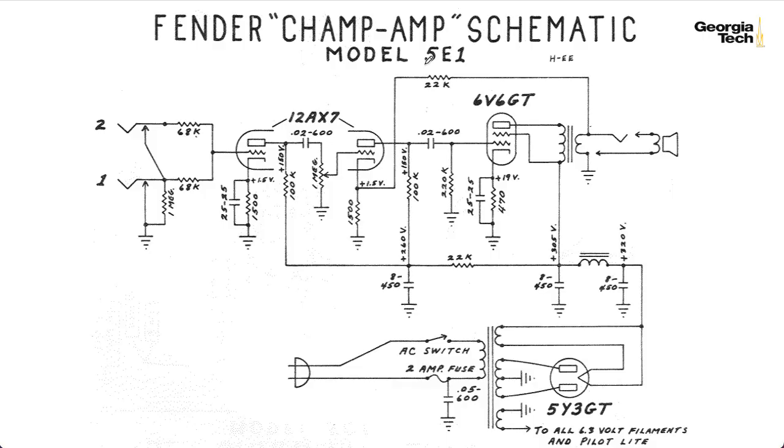We've been looking at the Fender Champ, in particular model 5E1. It consists of two capacitively coupled preamp stages that have a volume control in between. And they're identical except the first stage is fully bypassed and the second stage isn't bypassed at all. There is some feedback from the output transformer back to the second stage. This is fairly complicated to think about, so I'll save that for a future lecture. As far as this series of lectures goes, we'll ignore it.